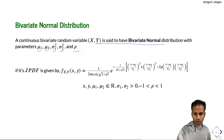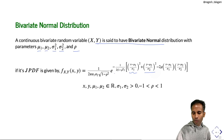f(x,y) = 1 / (2π σ1 σ2 √(1−ρ²)) · exp{ −1/(2(1−ρ²)) · [(x−μ1)/σ1)² + ((y−μ2)/σ2)² − 2ρ·((x−μ1)/σ1)·((y−μ2)/σ2)] }, for (x,y) ∈ ℝ². Here μ1, μ2 are any real numbers, σ1 and σ2 are positive, and ρ is between −1 and 1.